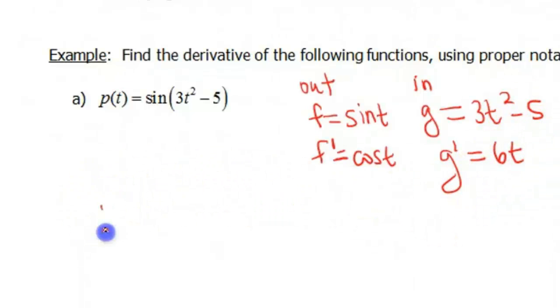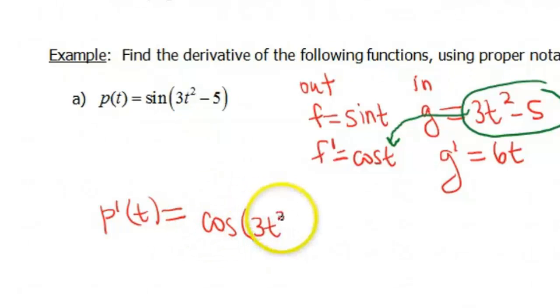Now putting these pieces together for our chain rule. Again, it says take our inside function and plug it into the derivative of that outside function. So that's going to look like cos(3t² - 5) times the derivative of that inside function, which is 6t.